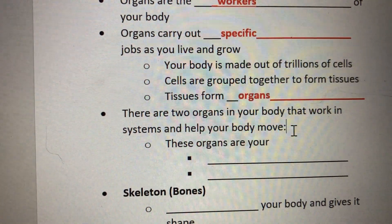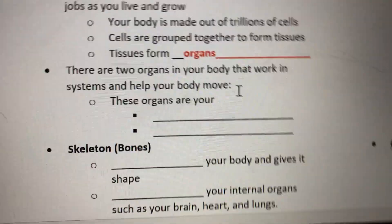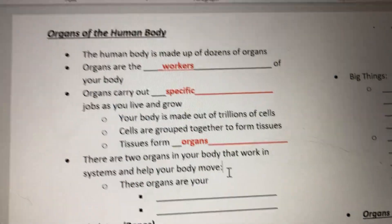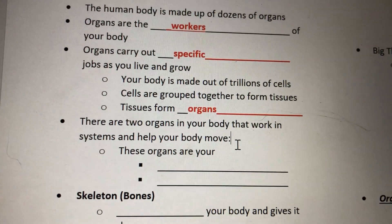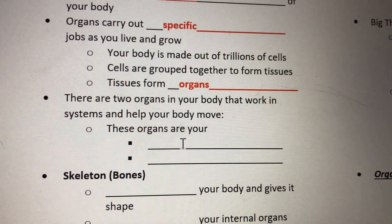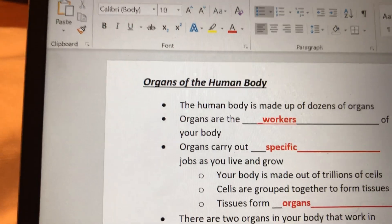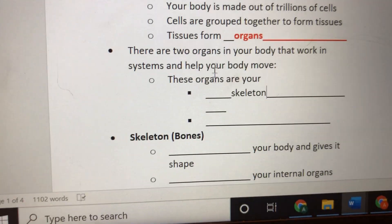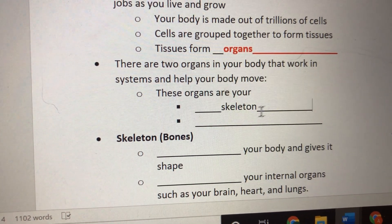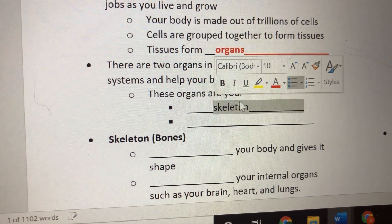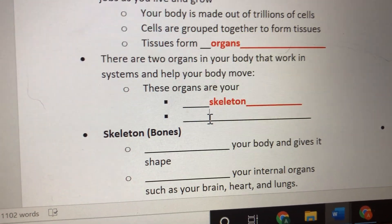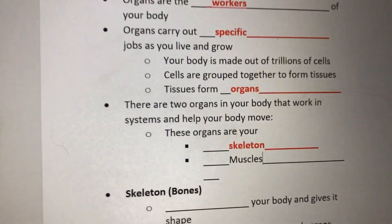Remember, if I'm going too fast just pause me. There are two organs in your body that work in systems and help you move. The first is your skeleton — s-k-e-l-e-t-o-n — and the second is your muscles — m-u-s-c-l-e-s. Pause me whenever you need to catch up.